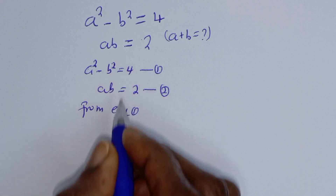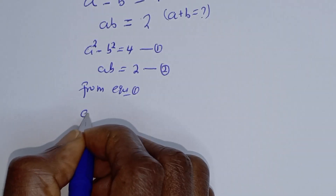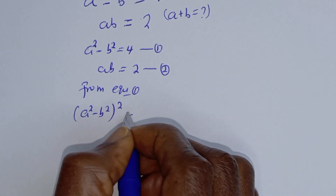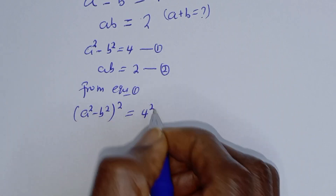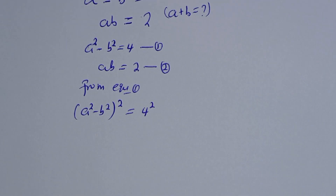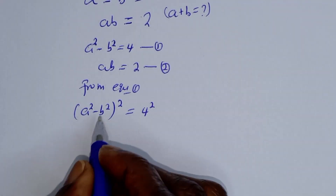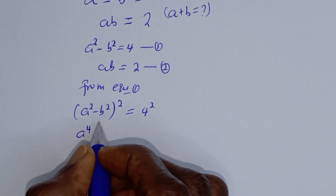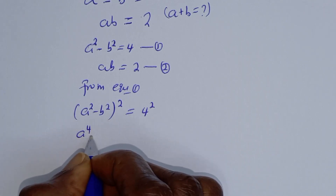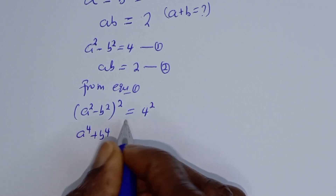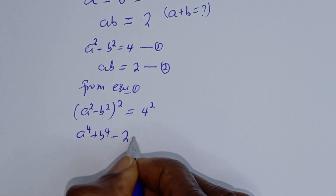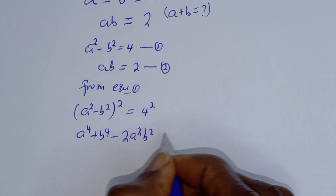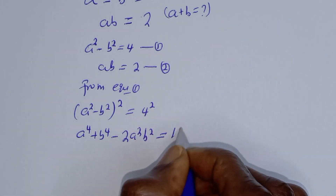From equation 1, let's square both sides of the equation: (a squared minus b squared) squared is equal to 4 squared. This gives us a to the power 4 plus b to the power 4 minus 2a squared b squared is equal to 16.